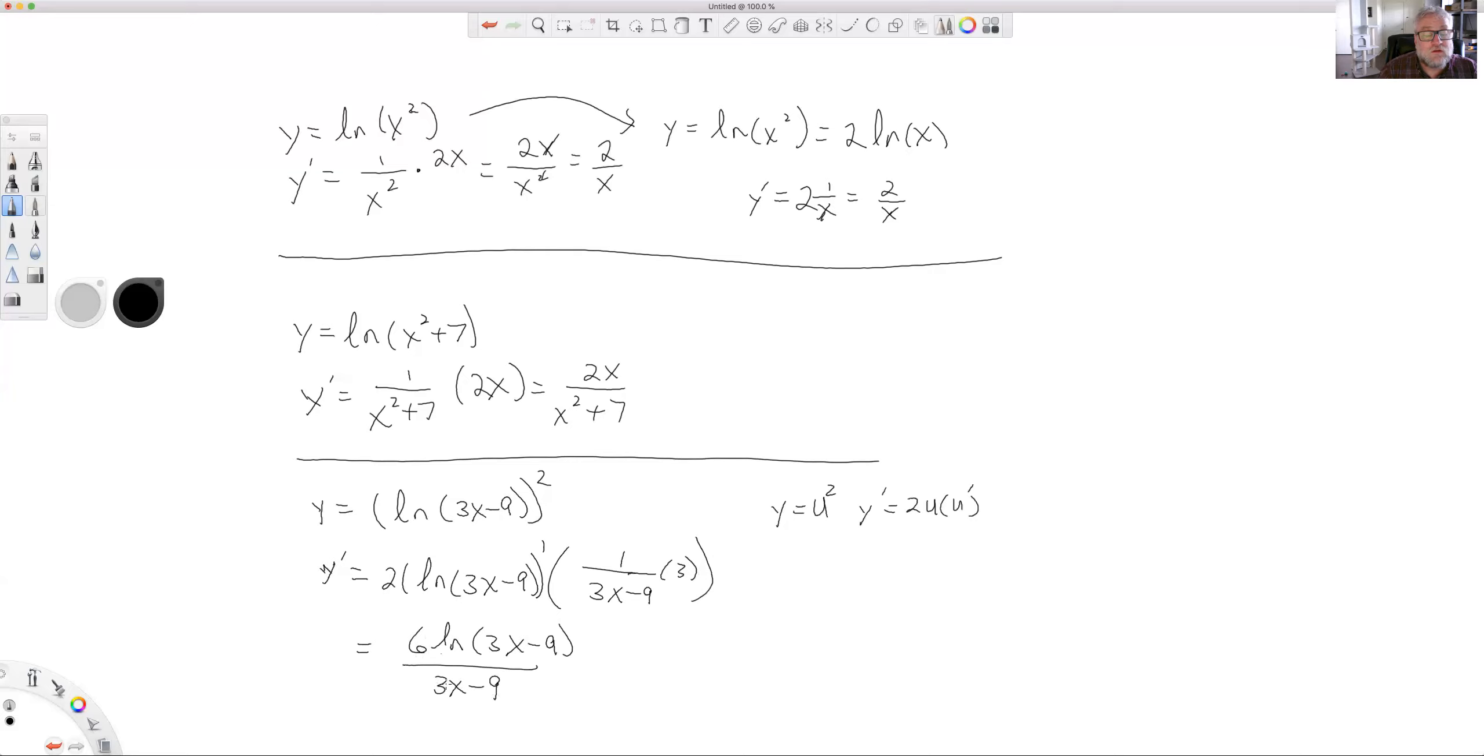6 ln(3x - 9) over 3x minus 9. And there's a 3 there we could cancel out. So we get 2 ln(3x - 9) over x minus 3. That's the derivative of that one. Let's do a couple more.